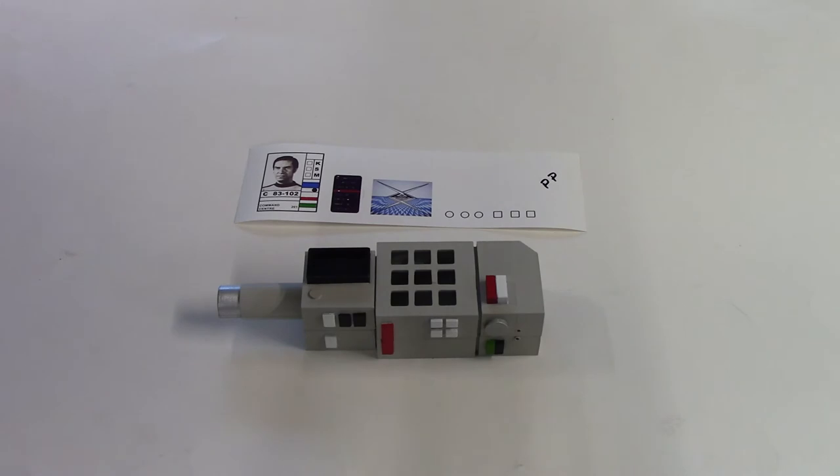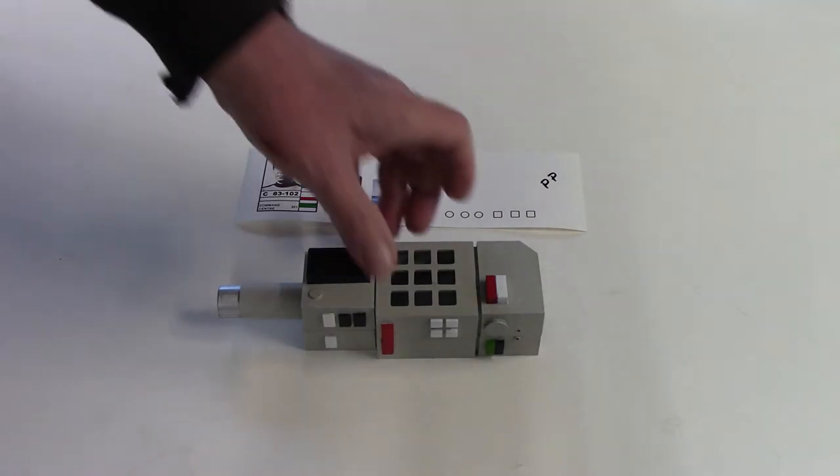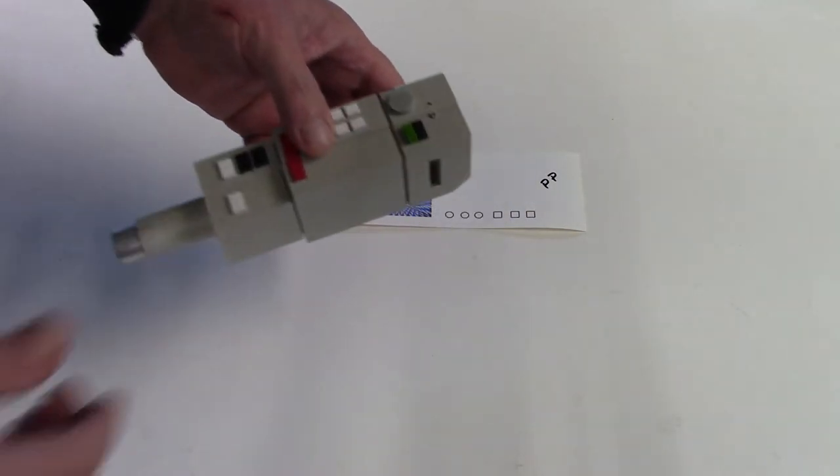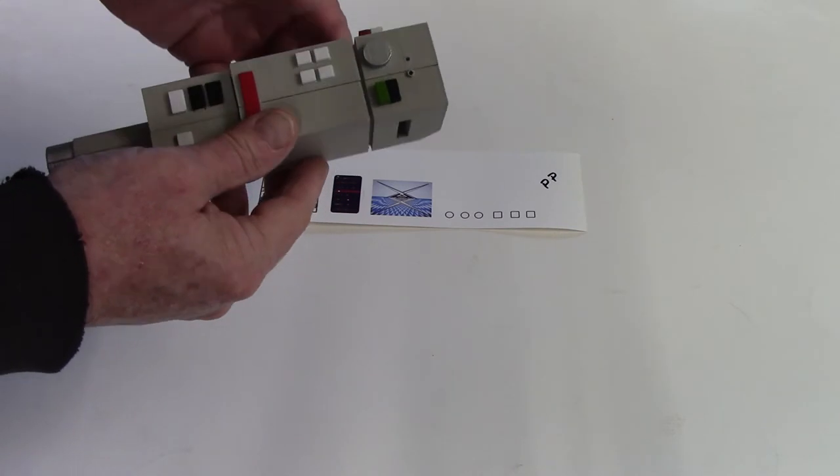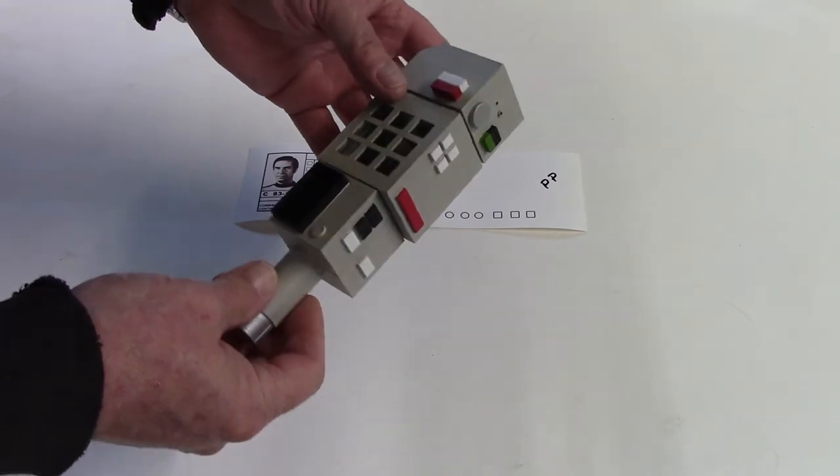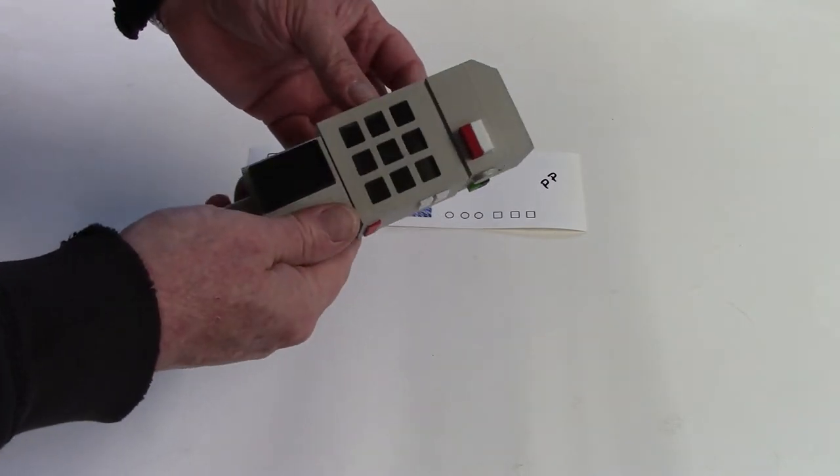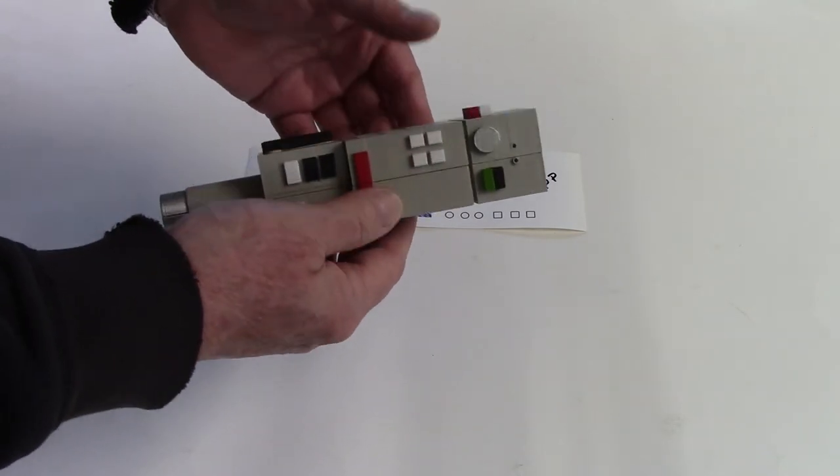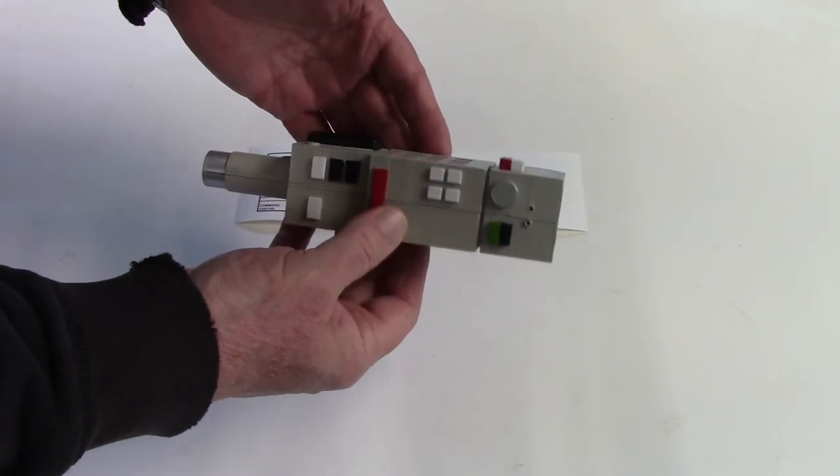So this is another project that I started working on. This is the Comlock from Space 1999. Now, I never got a chance to get a prototype of the ones that are coming out from Round Two, but this is relatively the same size as the 3D print that I made up.